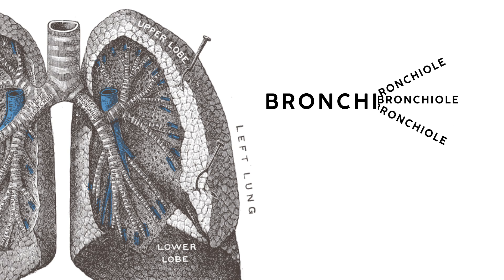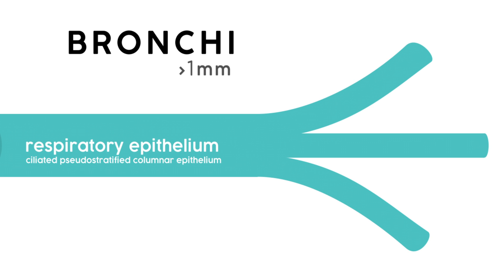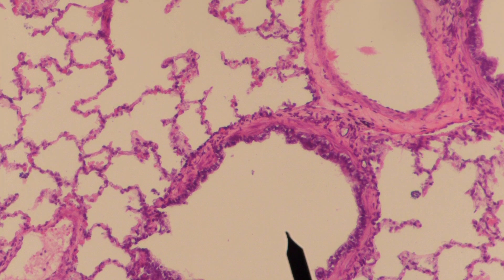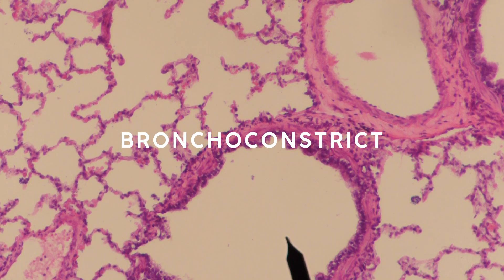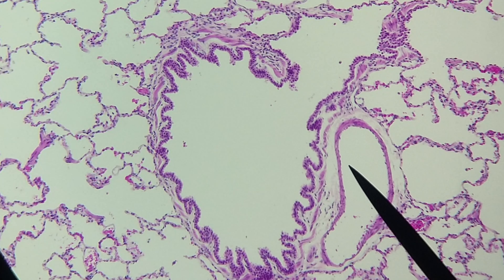Eventually the bronchi split into bronchioles, which is where we see some big differences. We'll typically classify bronchioles as anything narrower than one millimeter, while bronchi are wider. We'll transition from respiratory epithelium to more ciliated simple columnar epithelium — basically going from pseudostratified to simple, so a true single layer while still keeping the cilia. Both of these structures are surrounded by smooth muscle, which lets them bronchoconstrict or get narrower, or bronchodilate and get wider.